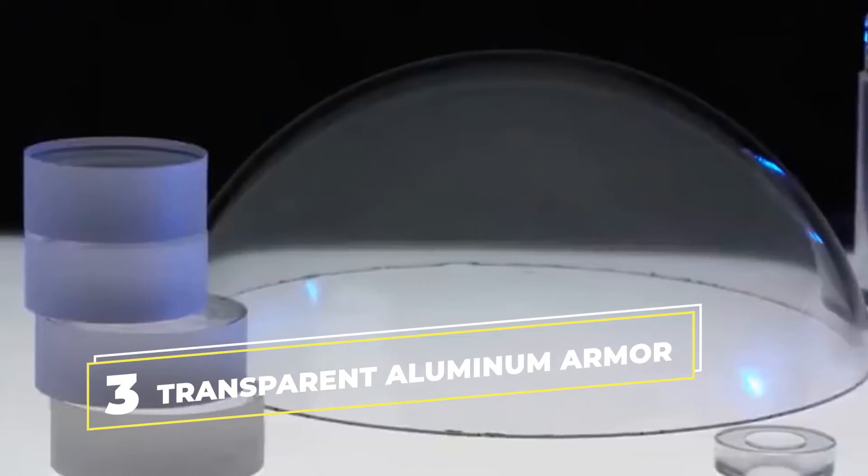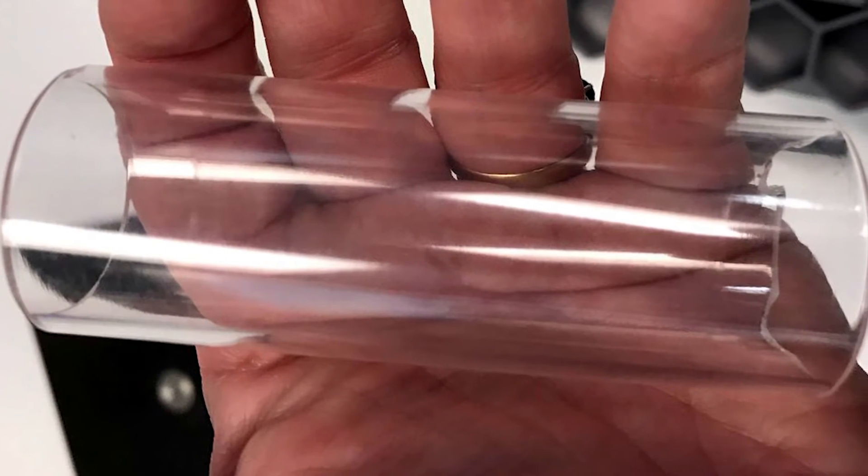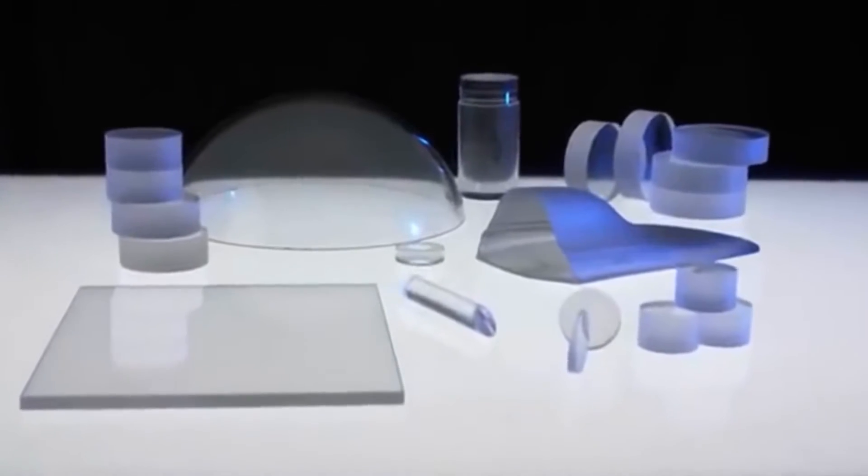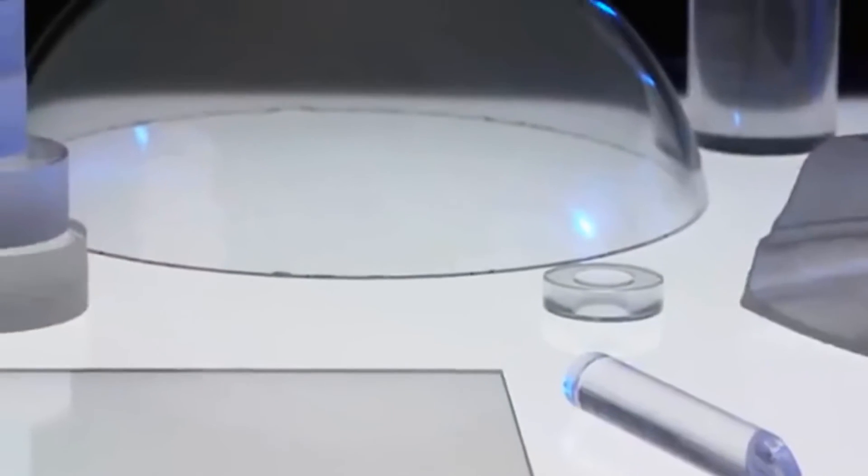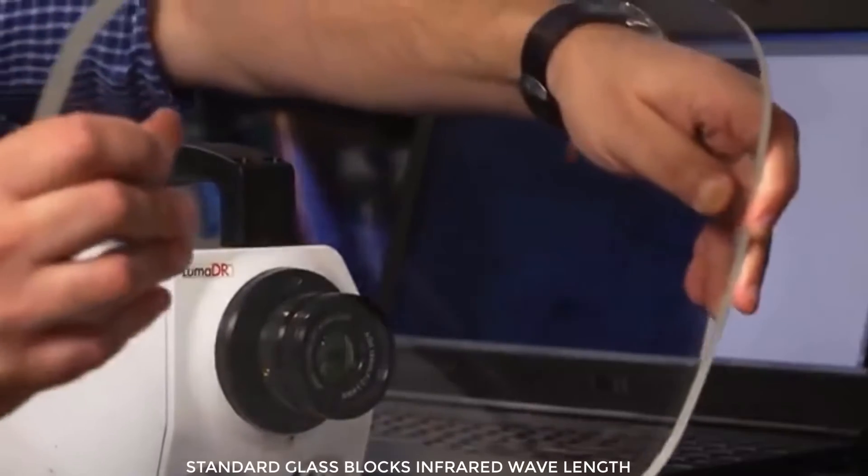The very exciting number 3 is Transparent Aluminium Armor. Ceramic compounds made of aluminium, oxygen, and nitrogen known as aluminium oxynitride, which is optically transparent and four times tougher than silica glass, can be made into transparent windows, plates, domes, rods, tubes, and many other things.